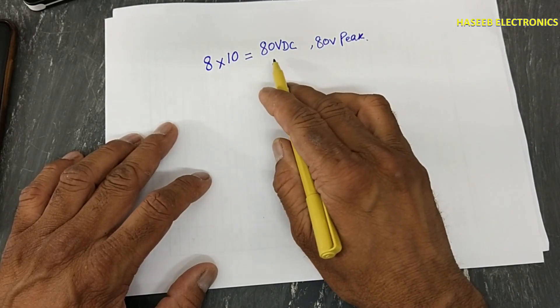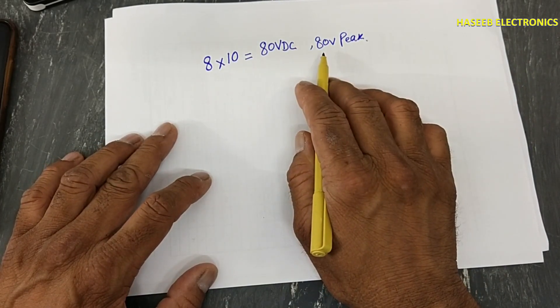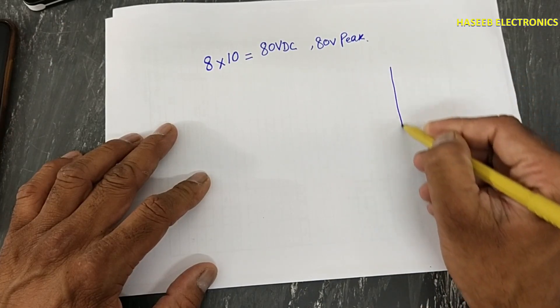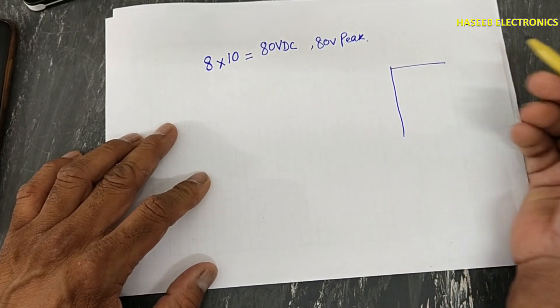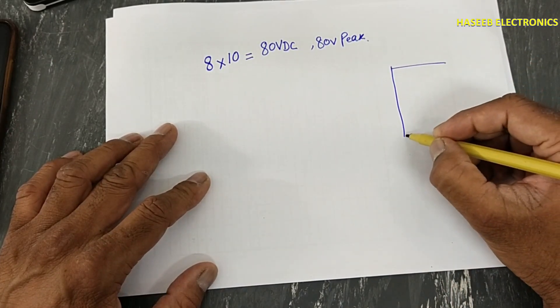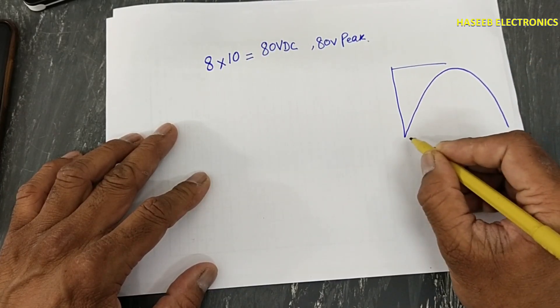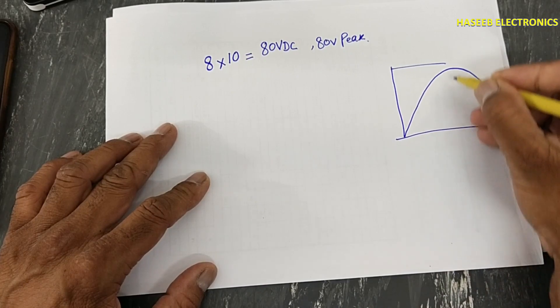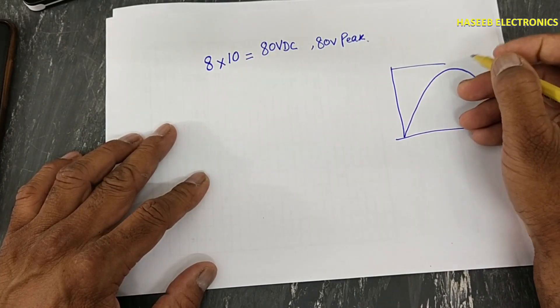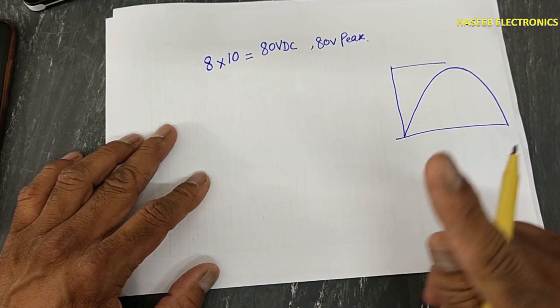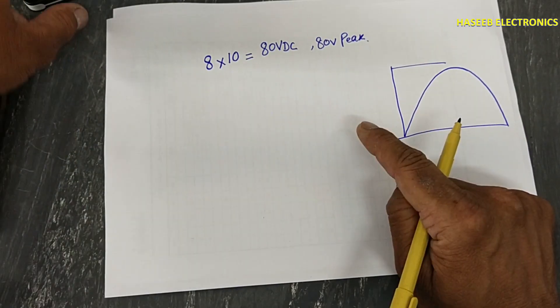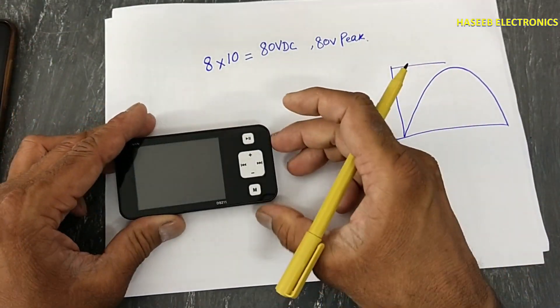Either we are using DC or AC. If we are measuring DC signal that is in this way, or if we are measuring any AC signal from zero line to upside or zero line to bottom side, only one peak. This point to be considered, that only one peak.